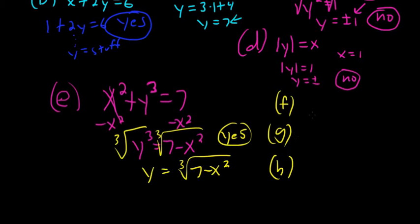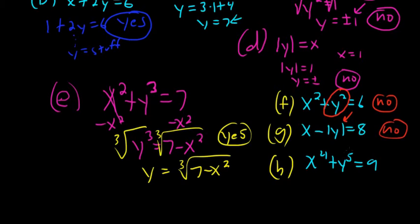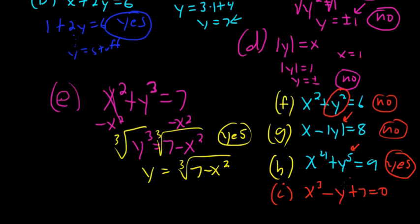Let's do three more examples. First: x² + y² = 6 — y is to an even power, so when we solve for y we get two y values. Answer: no. Second: x − |y| = 8 — there's an absolute value of y, so solving gives two y values. Answer: no. Third: x⁴ + y⁵ = 9 — y is to an odd power, so solving gives one y value. Answer: yes. And one more: x³ − y + 7 = 0 — easy to solve for y and you get one y value. Answer: yes.